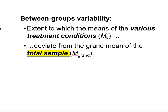Because we have differences from the grand mean, we now have some between-groups variability. Between-groups variability is the extent to which the means of the various treatment conditions deviate from the grand mean of the total sample. Symbolically, it is the deviation of Mₖ (the mean for a given treatment condition) from the grand mean of all 21 participants.